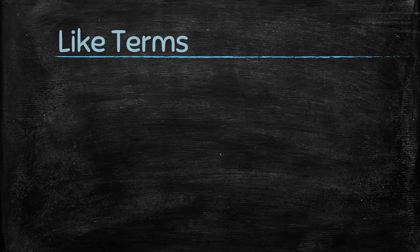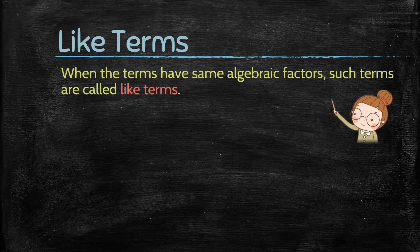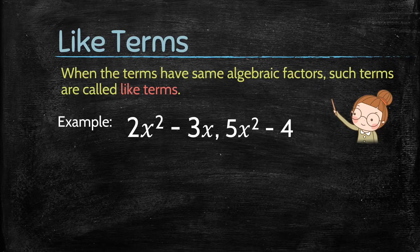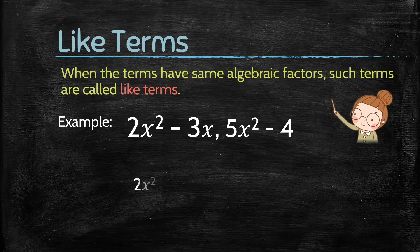Now let's understand what are like terms, which are very important to add or subtract algebraic expressions. When the terms have same algebraic factors, such terms are called like terms. For example, consider two algebraic expressions: 2x square minus 3x and 5x square minus 4. Here, 2x square and 5x square are like terms because they have the same algebraic factors.